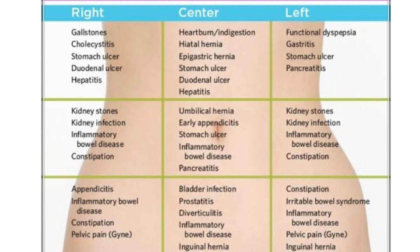In the left hypochondriac region, pain may be due to functional dyspepsia, gastritis, stomach ulcer, and pancreatitis. In the left lumbar region, pain is due to kidney stones, kidney infection, inflammatory bowel disease, and constipation.